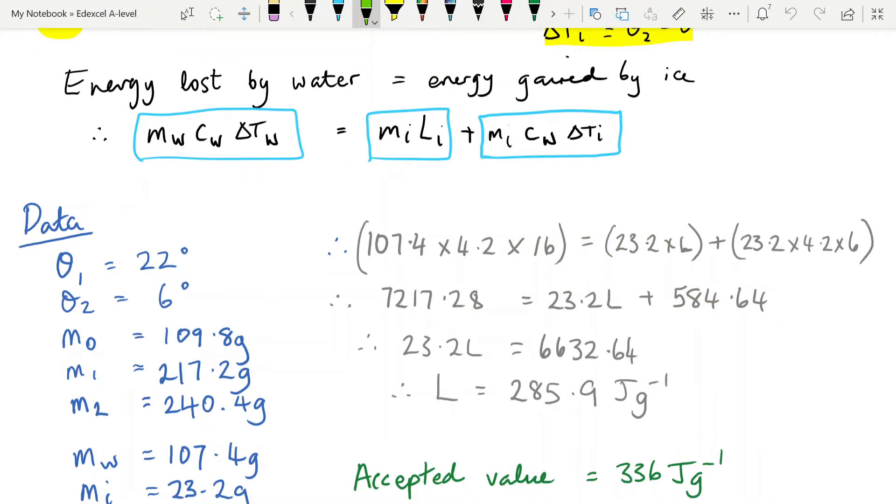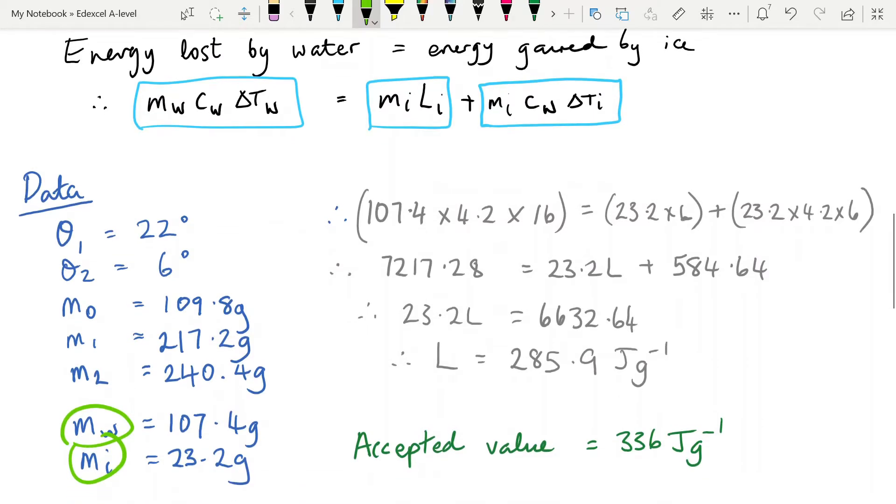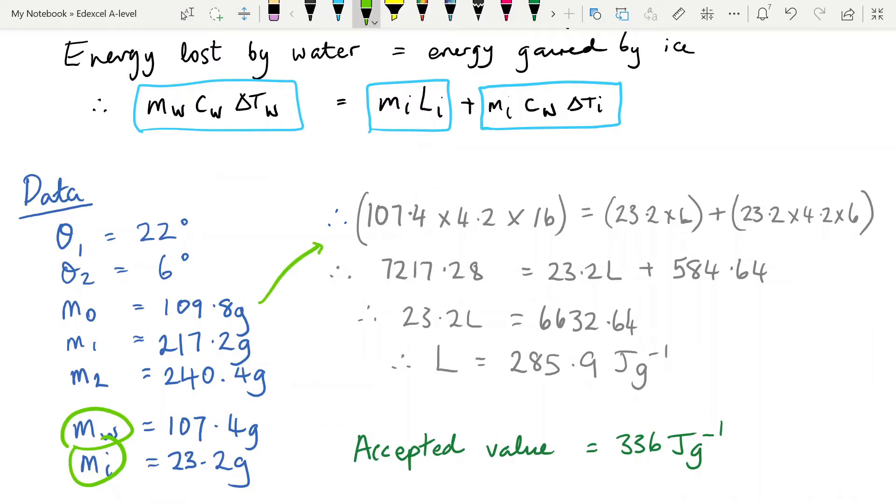Let's now look at some data. I've made a list of all of our variables here. So suppose our theta 1, the temperature of the water originally was 22, and theta 2, the final temperature of the water plus melted ice mixture is 6. These are our masses, empty beaker, beaker plus water, and beaker plus water plus melted ice. And therefore, doing calculations from those gives you the mass of the water and the mass of the ice. And all I've done then is I've just substituted these in here. So mass of water left everything in grams because I've got my specific heat capacity in grams. Change in temperature, again, is just the subtraction of those two there. Substitute it in, rearrange, and find a value for L. So my value for L that I got was 285.9 joules per gram. The accepted value is 336. So not bad.